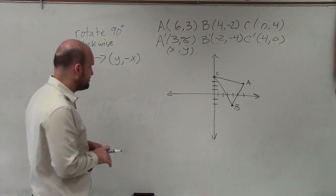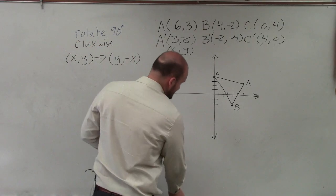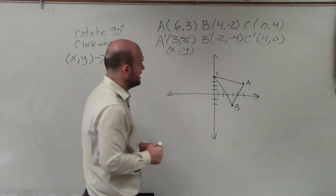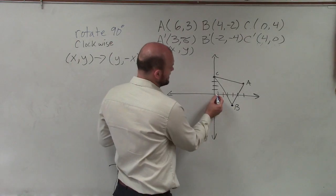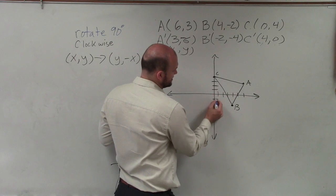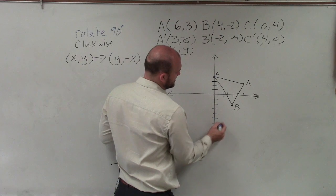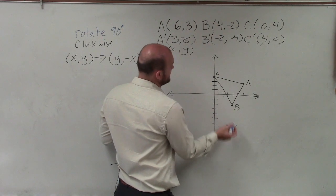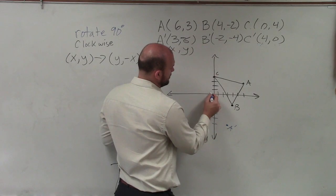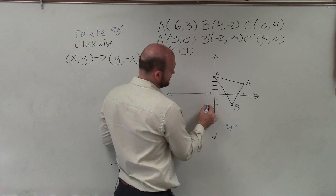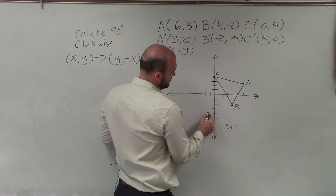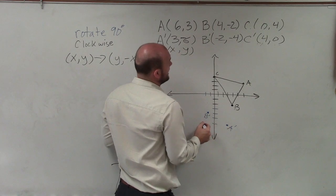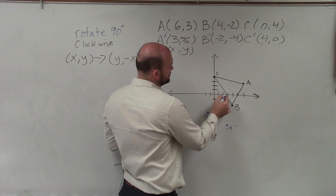So now let's go ahead and plot these two and see if this kind of makes sense into my original image that I did. So A is at 3 negative 6. So 1, 2, 3, down 6. 1, 2, 3, 4, 5, 6. So I'll label that as A prime. B is at negative 2, negative 4, 1, 2, negative 4, 1, 2, 3, 4. And C is at 4 comma 0, 1, 2, 3, 4.